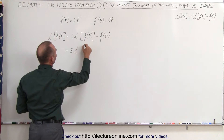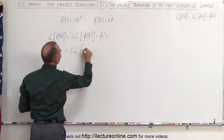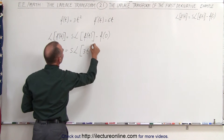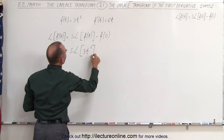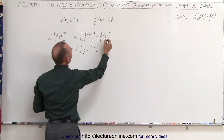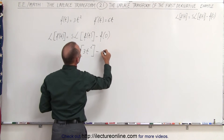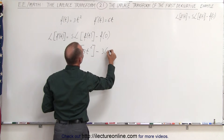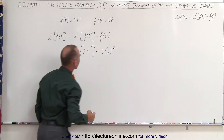So the Laplace transform of 3t squared minus f of 0 — the function evaluated at 0 — so it would be 3 times 0 squared.